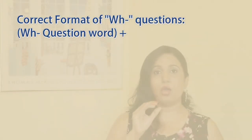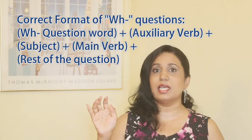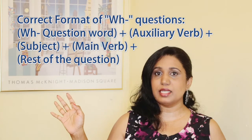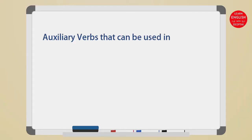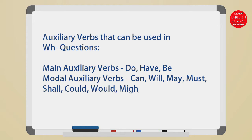Let's see what the correct format of a WH question should be. In a WH question, the first word is always a WH word, followed by an auxiliary verb, then the subject, then the main verb, and then the rest of the sentence. There are three main auxiliary verbs in English: do, have, and be. These are usually used as helping verbs. There are also modal auxiliary verbs: can, will, may, shall, must. Any of these can work as an auxiliary verb for a WH question.